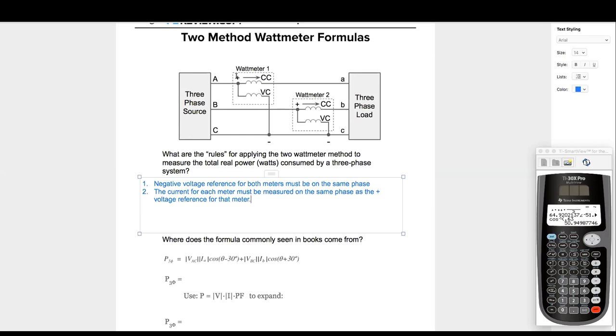Let's see. Wattmeter one. Positive voltage reference is on A. We're measuring the current on phase A. Good so far. Wattmeter two. The positive voltage reference is on phase B. Good to go.